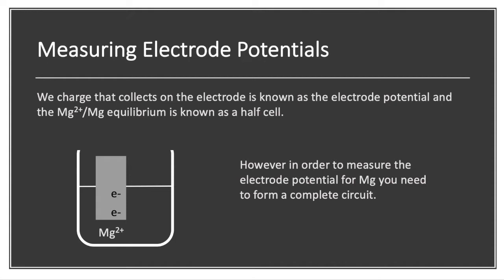So how can we get a value for that charge? How do I know that that charge, that piece of magnesium metal, will have a more negative charge than if it was a piece of copper?